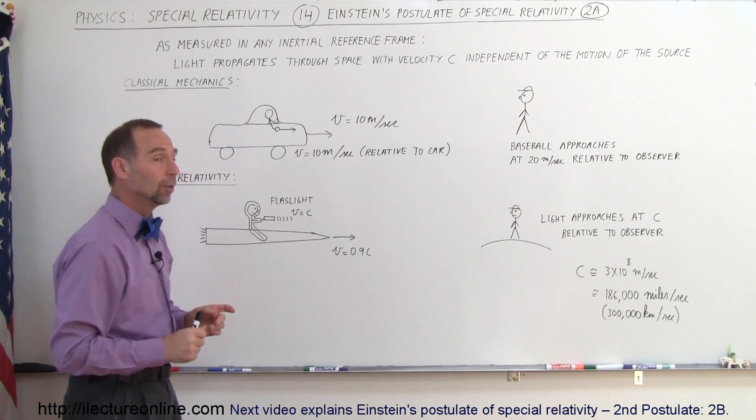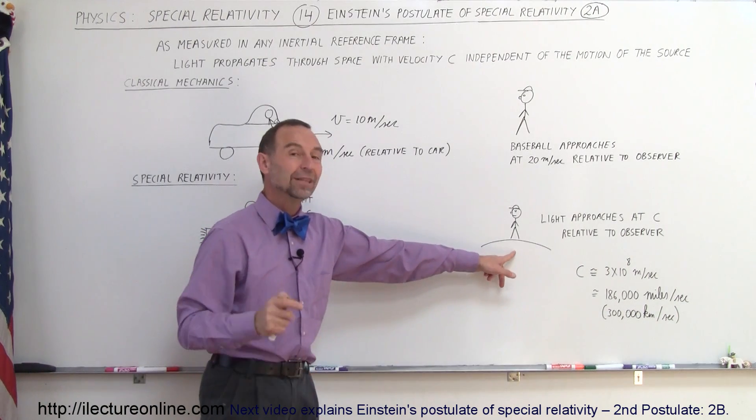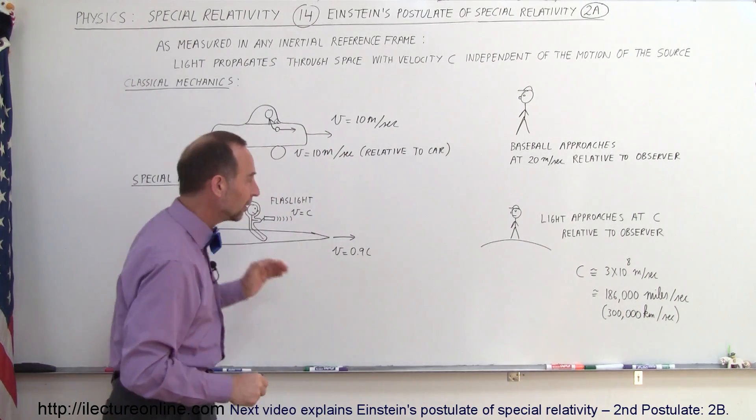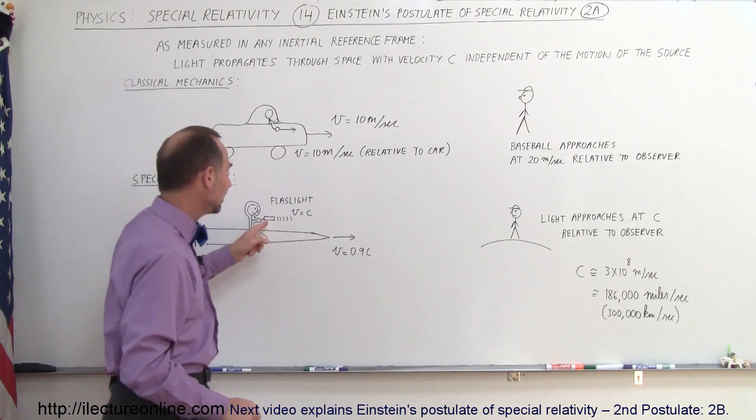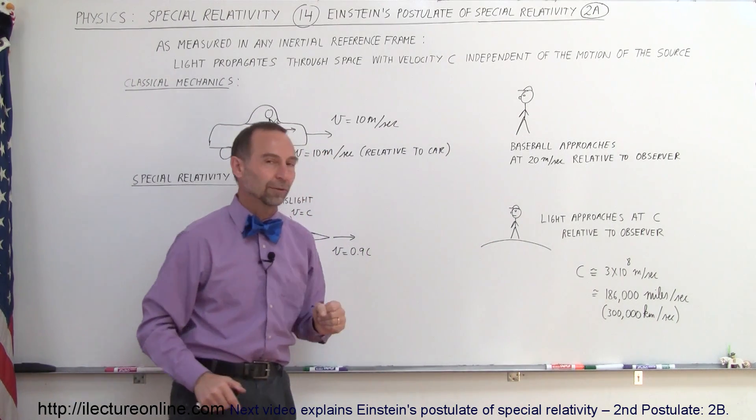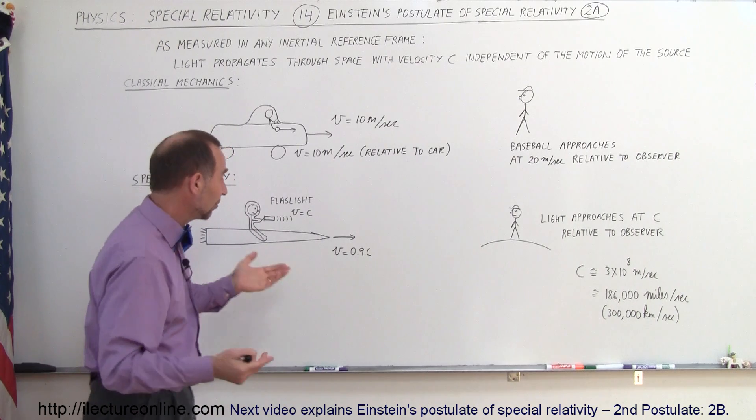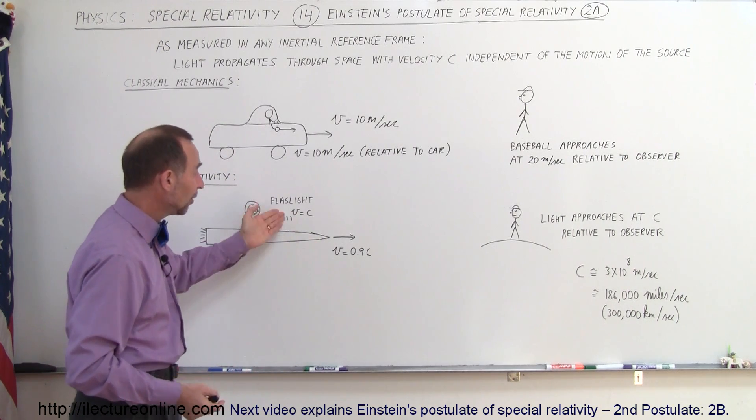Now as an observer standing on top of some nearby planet, watching this whole event unfold, what is the speed of the light as the light approaches this observer? Now most people would say, well, we simply just like we did here, add the velocities.